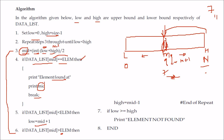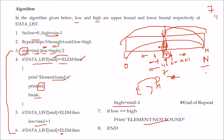This goes again and again. If low becomes greater than high, that means high has crossed low, meaning the element is not found. This is how you compute the binary search.